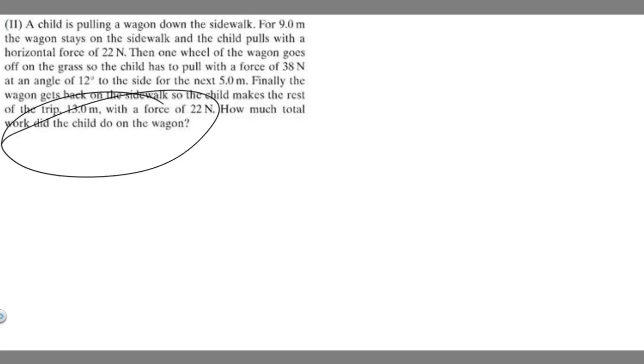In this problem, we're told a child is pulling a wagon down the sidewalk. For 9 meters, the wagon stays on the sidewalk and the child pulls with a horizontal force of 22 newtons. Then one wheel of the wagon goes off the grass, so the child has to pull it with a force of 38 newtons at an angle of 12 degrees to the side for the next 5 meters. Finally, the wagon gets back on the sidewalk, so the child makes the rest of the trip, which is 13 meters, with a force of 22 newtons. How much total work did the child do on the wagon?